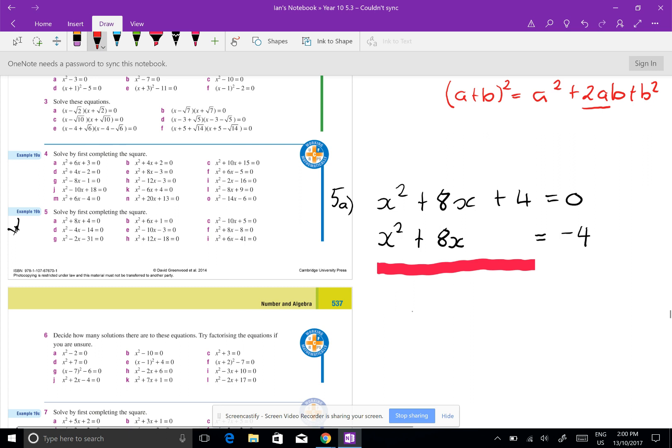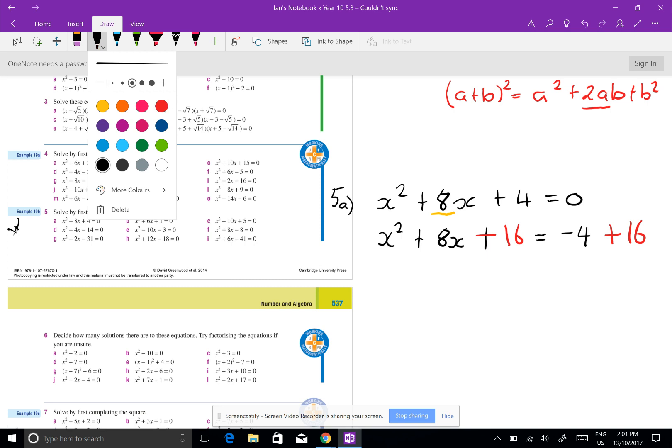So what I'm going to do as I go here, I'm going to halve this and square it and I'm going to add it to both sides. So half of 8 is 4, and 4 squared is 16. So I'm going to add 16 to both sides. Now this whole equation is a perfect square and I can solve it, or I can factorize it.